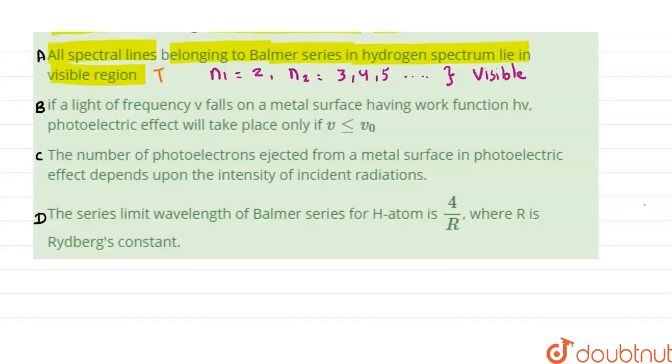Statement B is: if a light of frequency ν falls on a metal surface having work function ν₀, the photoelectric effect will take place only if ν ≤ ν₀. This statement is false because we know that the kinetic energy of the photoelectrons which are emitting